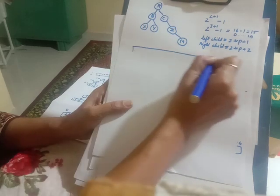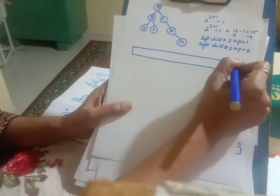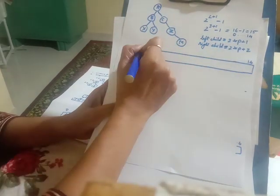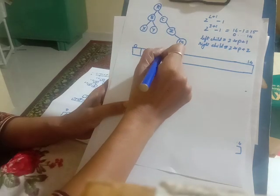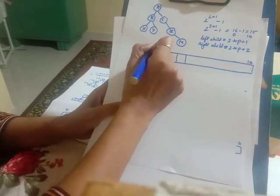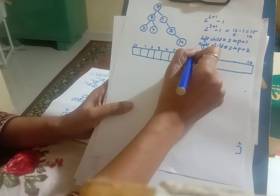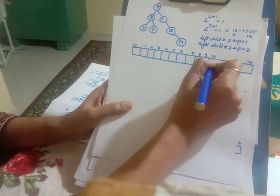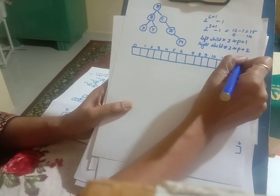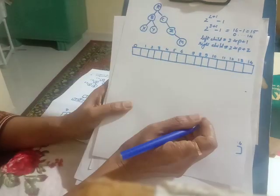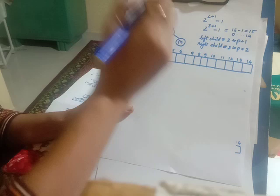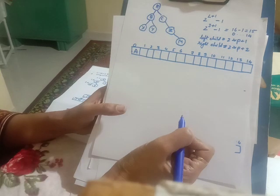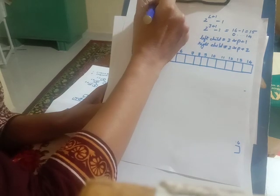This is the array we require, of size 15, starting from index 0 to 14. The root node will always be stored at the 0th location. So we store the root node A at the 0th location.